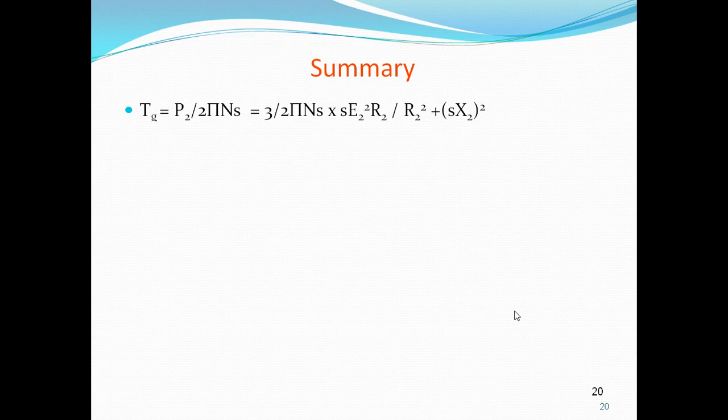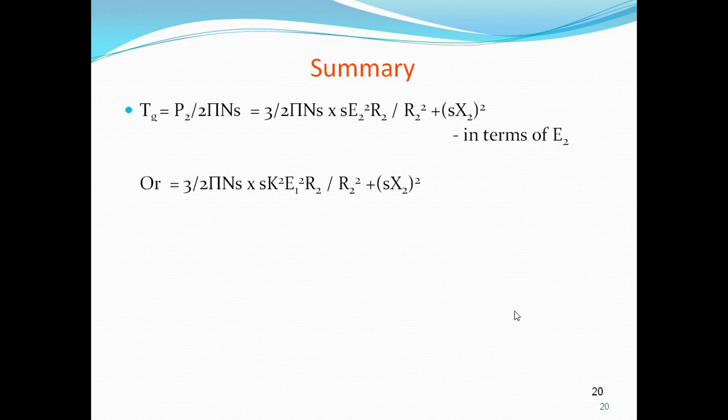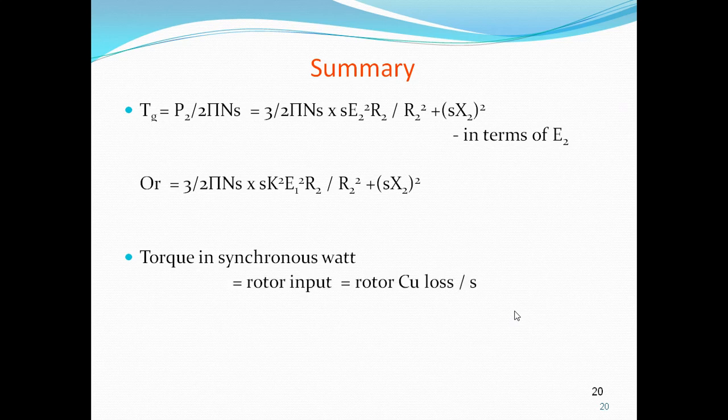Summary: gross torque Tg = P2 / (2πNS) = [3 / (2πNS)] × 3·E2²·R2 / (R2² + (S·X2)²). Torque in synchronous watts equals rotor copper losses divided by S.